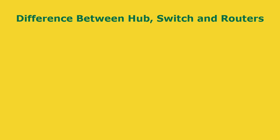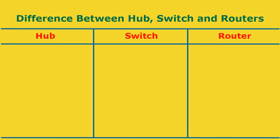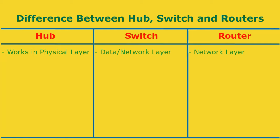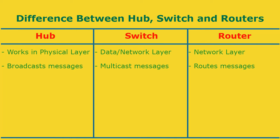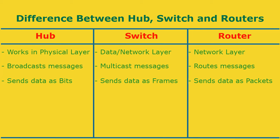To differentiate between hub, switch, and router: a hub works at the physical layer of the OSI model, a switch works at the data link layer, and a router works at the network layer. A hub broadcasts messages, a switch multicasts messages, and a router actually routes messages. A hub sends data in bits, a switch sends data in frames, and a router sends data as packets.